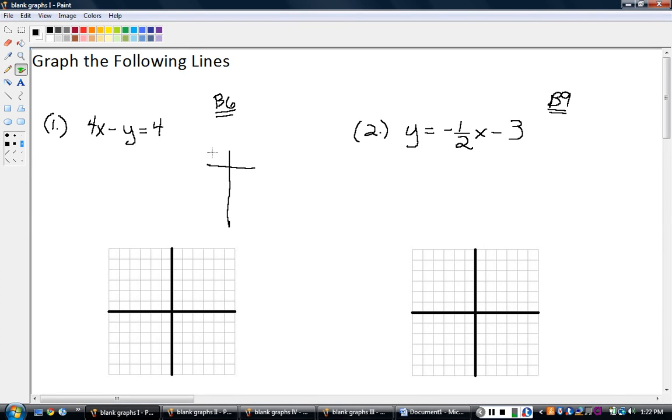Remember, we're doing these two different ways. If it's in this standard form where X and Y are on the same side, we did it by these intercepts, remember this? So we're going to do that again here. If X is zero, what's Y? If Y is zero, what's X? So let's go through this.